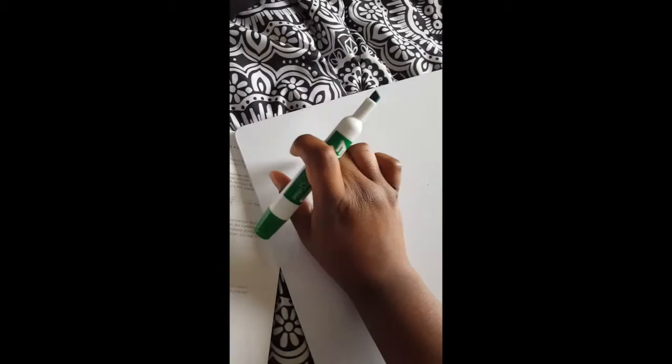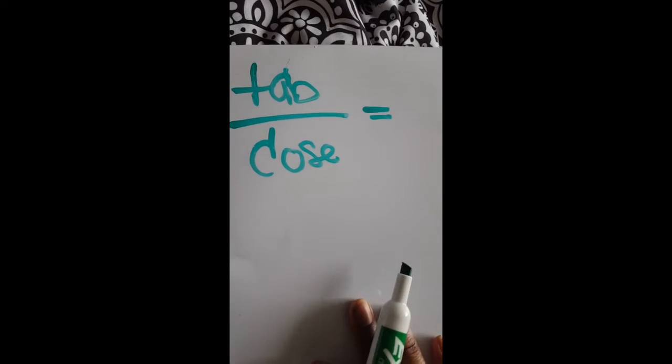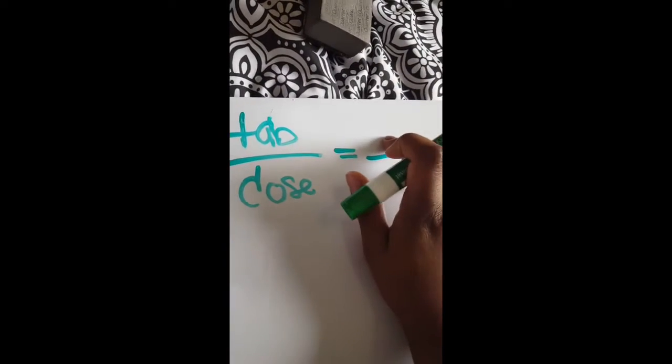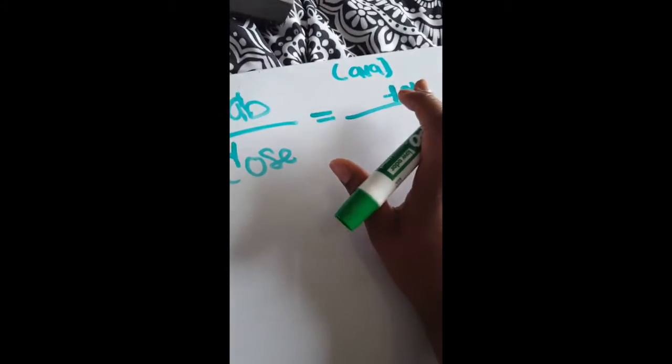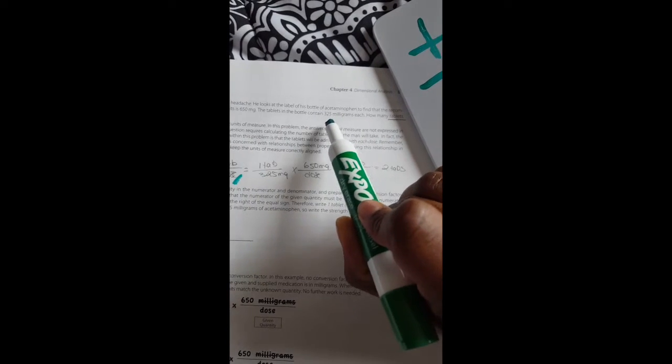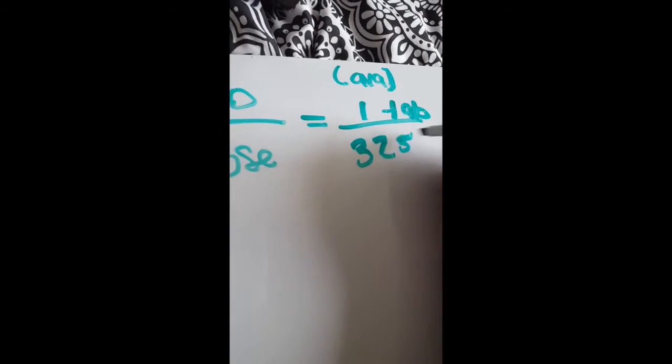What we're going to do first is you always want to put first what you're looking for. So you put 'tabs.' And you can just put 'dos' or you can just leave it blank. So tabs for dose. Now this top part of this line is going to have to match this exactly. So go ahead and put 'tab' already so you know. Then go back to your problem. The top of this whole part is going to be what's available. We know that the tablets in the bottle contain 325 mg each. So one tab is 325 mg.